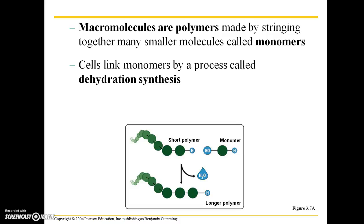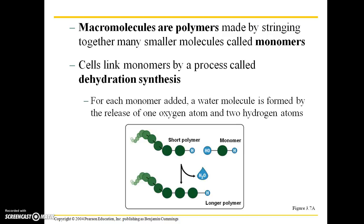Cells link monomers by a process called dehydration synthesis. When a monomer is added to a polymer string, a water molecule is formed by the release of one oxygen atom and two hydrogen atoms. The monomer comes in with a hydroxyl group, and there is an extra hydrogen atom on the end of the short polymer. Those two groups combine to form a water molecule, and then you have added a monomer to your growing polymer.